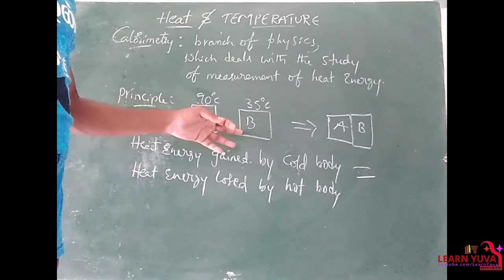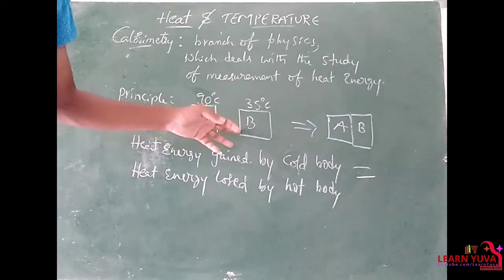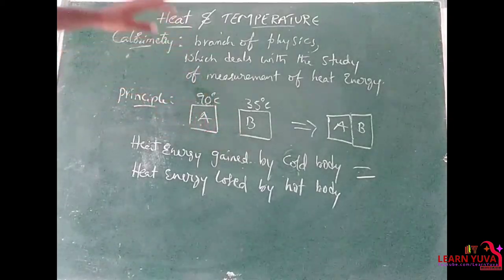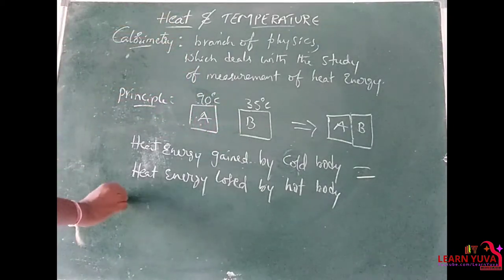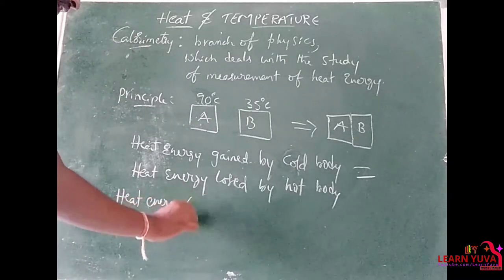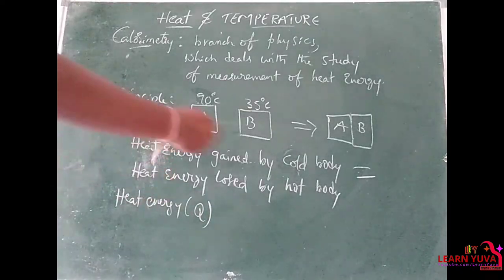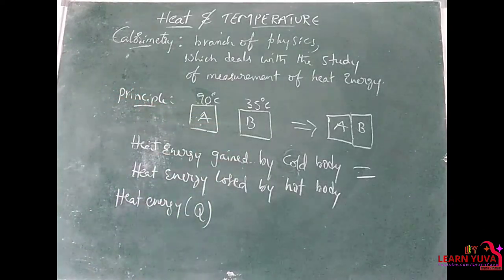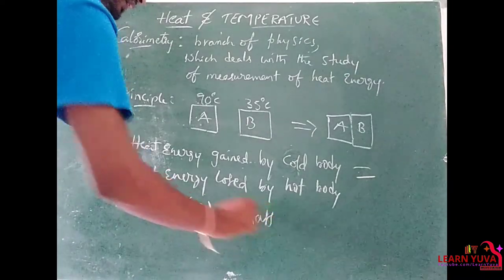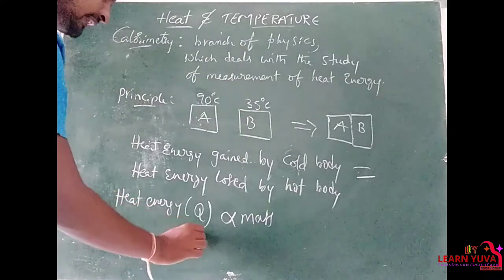Body B is the cold body compared to body A. The amount of heat energy transferred to body B is denoted by Q. This heat energy depends upon the mass of the body and also upon the change in temperature.